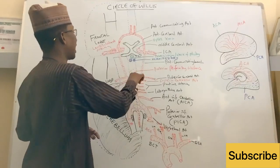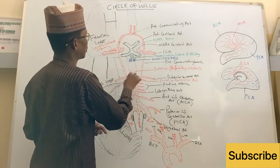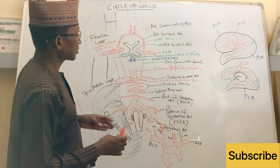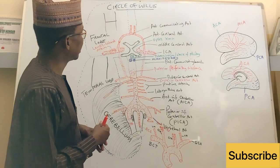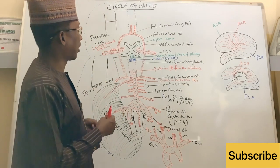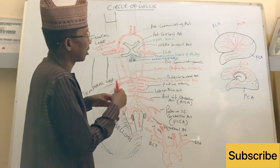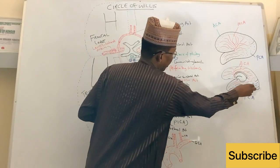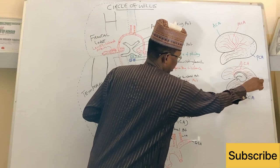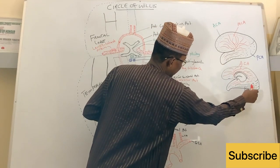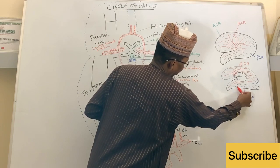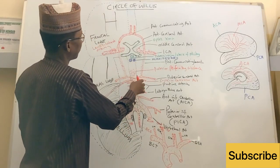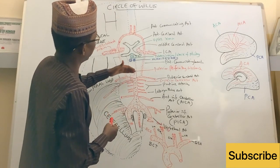The superior cerebellar artery supplies the anterior lobe of the cerebellum, so the whole of the anterior lobe is supplied by the superior cerebellar artery. The basilar artery now terminates into two branches known as the posterior cerebral arteries. These posterior cerebral arteries, as the terminal branches of the basilar artery, supply the occipital lobe and also the inferior surface of the temporal lobe.